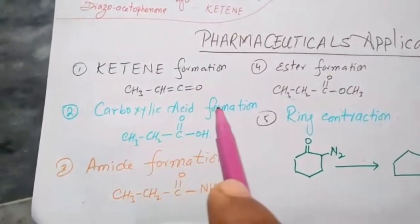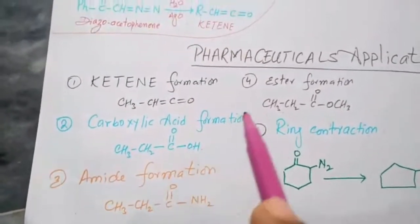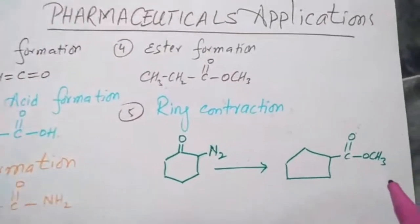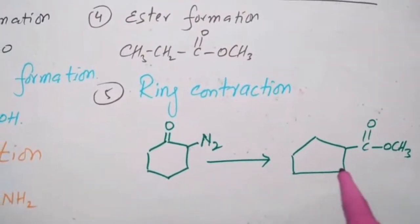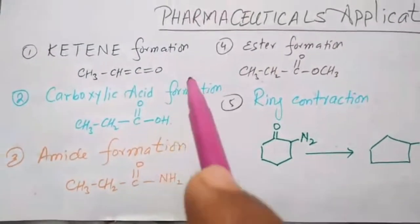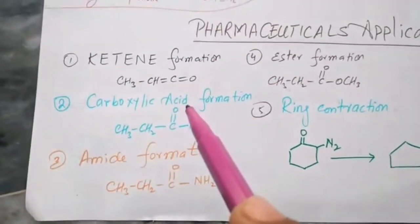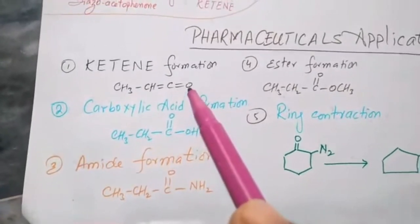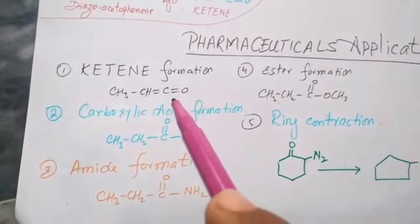Pharmaceutical applications: number one is ketene formation. Number two, carboxylic acid formation. Amide formation, ester formation, and ring contraction. In this, ring contraction occurs. Look here.